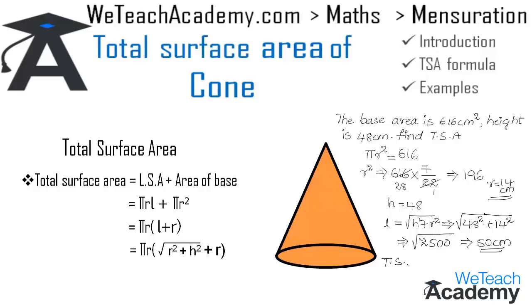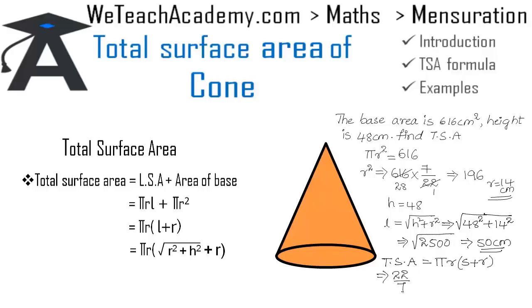The total surface area formula is π·r·(l + r). Substituting π = 22/7, r = 14, and l = 50: (22/7) × 14 × (50 + 14) = (22/7) × 14 × 64. Simplifying, 7 divides into 14 twice, giving 22 × 2 × 64 = 2816 cm².